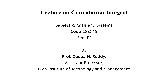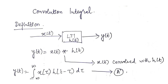Hello everybody, today we are going to learn how to convolve two signals in continuous time domain. The lecture is on the convolution integral. Given any LTI system characterized by its impulse response h(t) and any arbitrary input x(t), we can determine the output y(t) using convolution, expressed as y(t) = x(t) * h(t), where the asterisk symbol indicates the convolution operator.